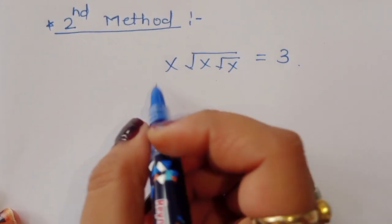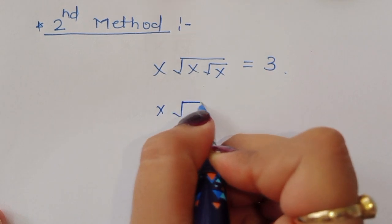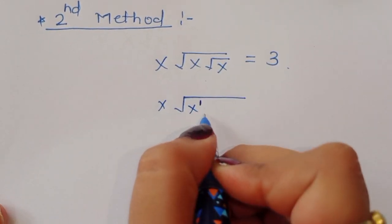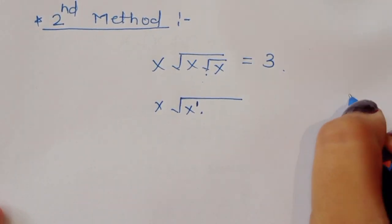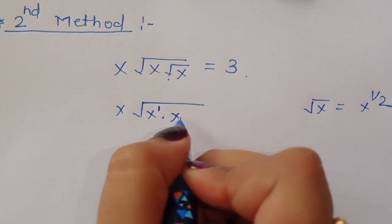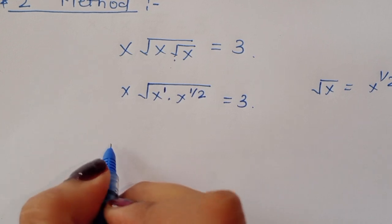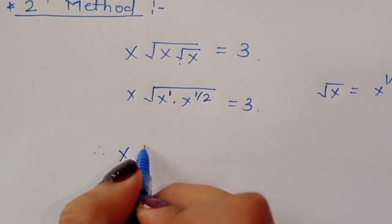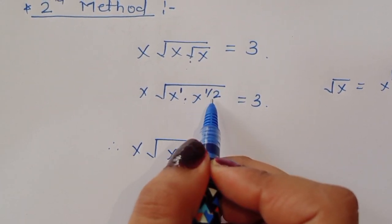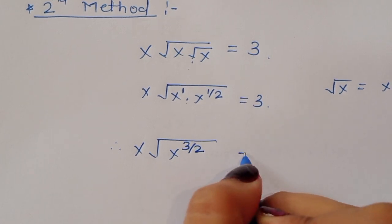In the second method, we write x times square root of x times square root of x. We know that square root of x equals x power 1 by 2. So x power 1 times x power 1 by 2 equals x power 3 by 2, and that equals 3.